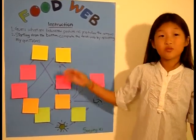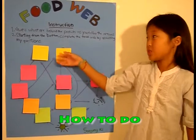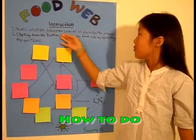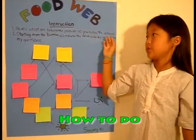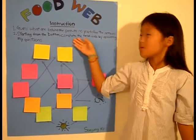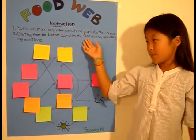Now let me read the instructions. Number one: guess what are behind the post-its as you follow the arrows. Number two: starting from the bottom, complete the food web.